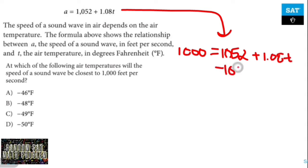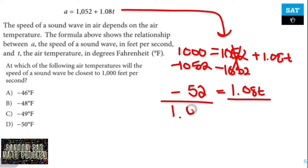That's going to equal 1052 plus 1.08t. First thing I'm going to do is subtract 1052 from both sides. That gives me negative 52 equals 1.08t. Now I divide both sides by 1.08, and that's going to require a little bit of long division.